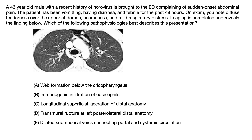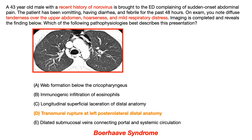The correct answer to this question is choice D, transmural rupture at the left posterolateral distal anatomy. What we're seeing here is Boerhaave syndrome, and I've highlighted in red what you should have pulled out of the question stem.